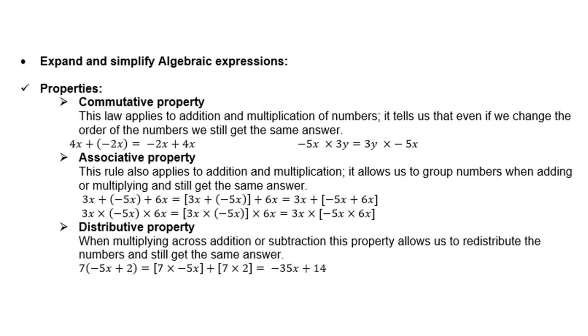Distributive property: when multiplying across addition or subtraction, this property allows us to redistribute the number and still get the same answer. Like 7 into minus 5x plus 2, it is 7 times minus 5x plus 7 times 2, and that gives you negative 35x plus 14.